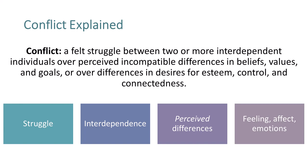Interpersonal conflict is defined as a felt struggle between two or more interdependent individuals over perceived incompatible differences in beliefs, values, and goals, or over differences in desires for esteem, control, and connectedness. Breaking it down, interpersonal conflict has four aspects. First, we have struggle — this is probably what you think of when you hear conflict. There is a struggle, interaction of some sort, or opposition.